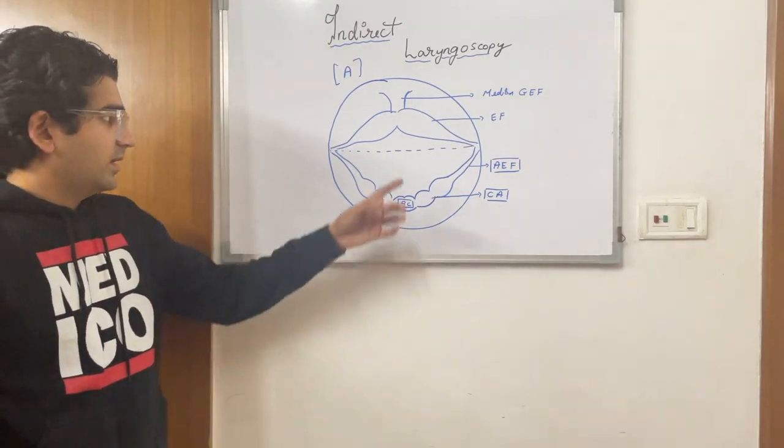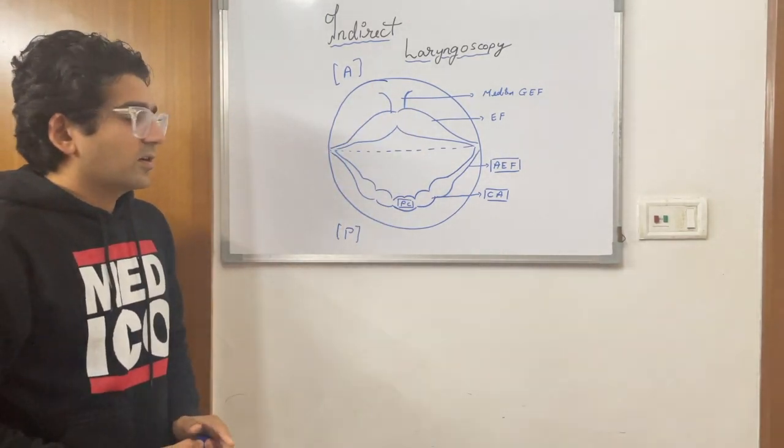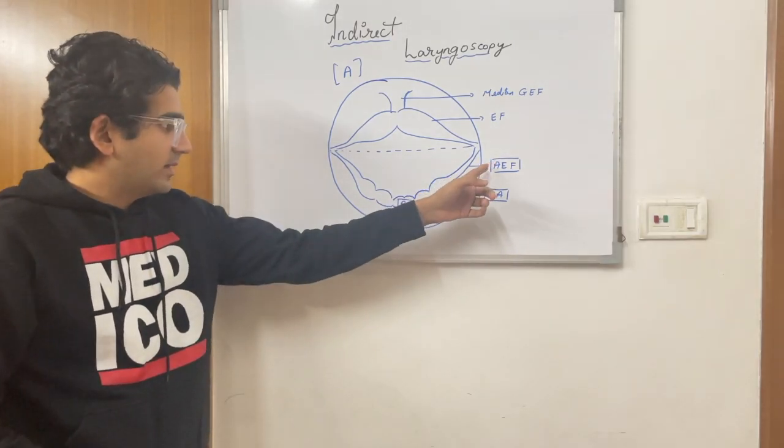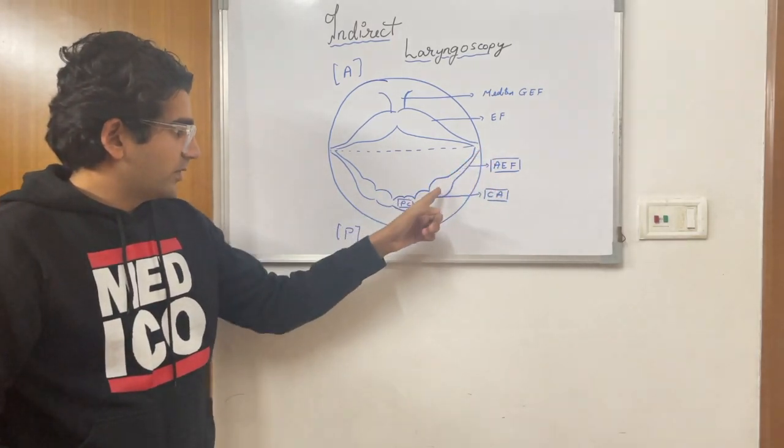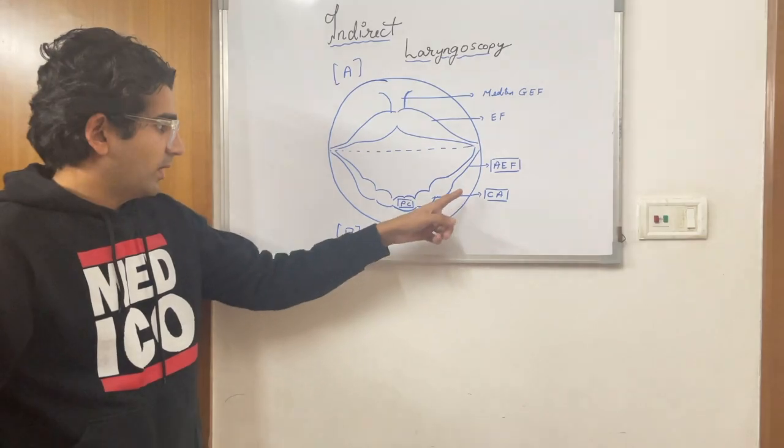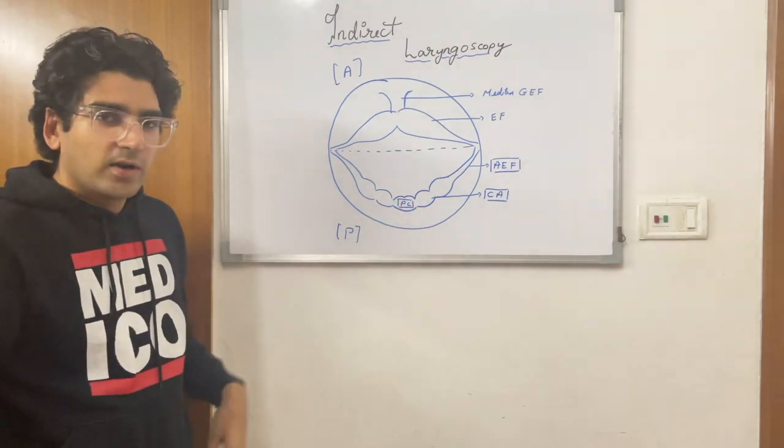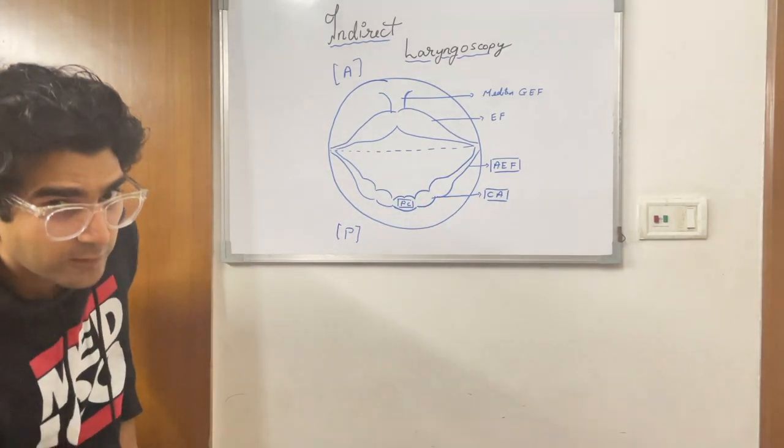So we have the epiglottis, we have the median glosso-epiglottic folds, there are the aryepiglottic folds right here, and you have the cricoarytenoid and the post-cricoid region. Apart from that, you will be having the posterior pharyngeal wall.